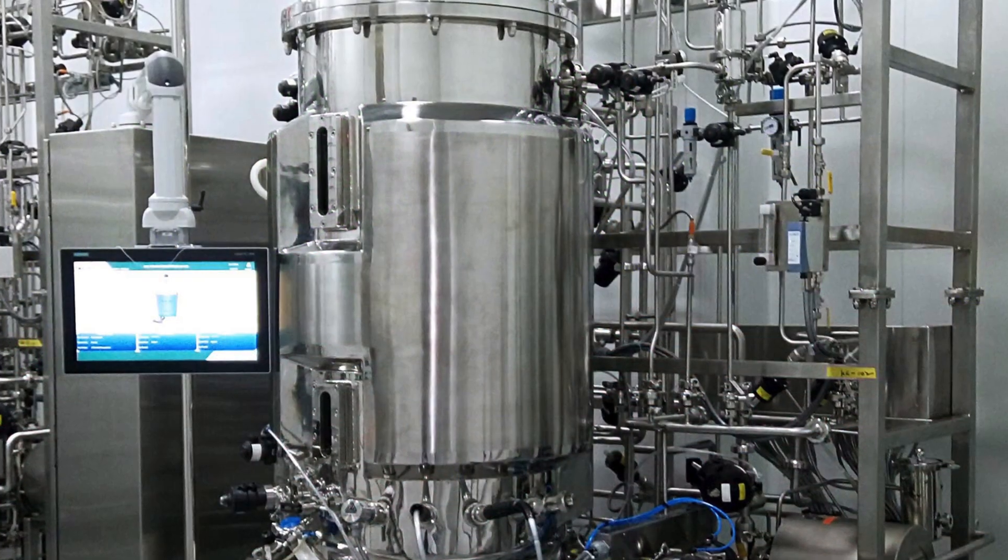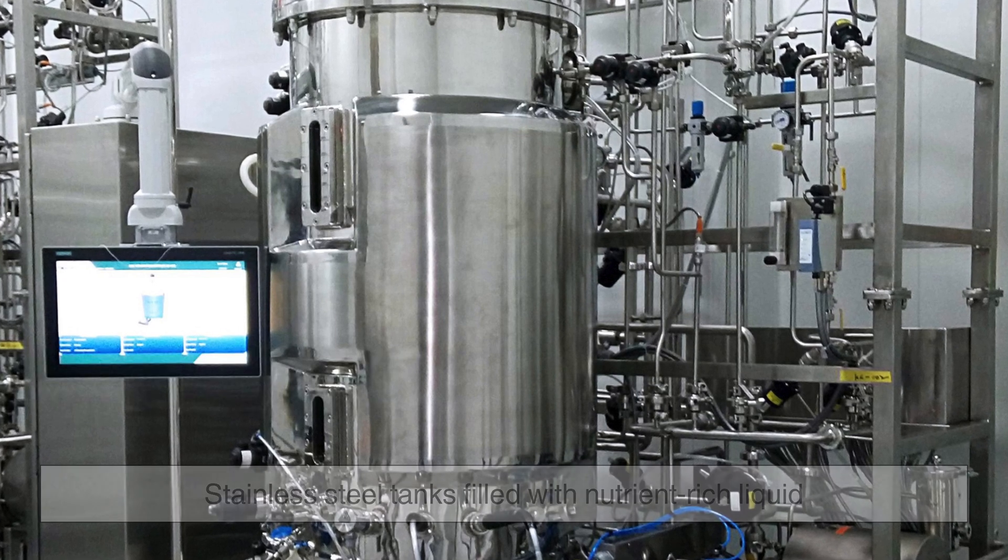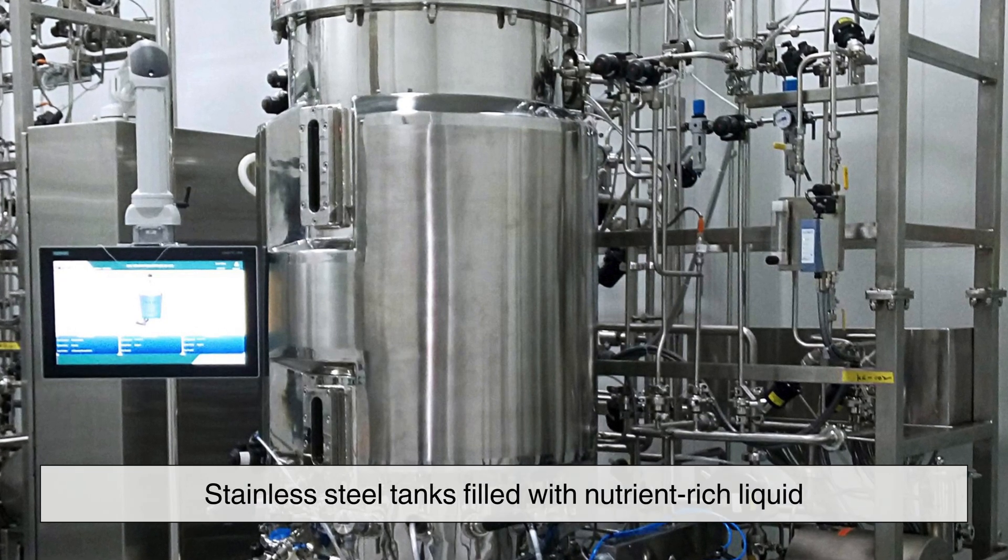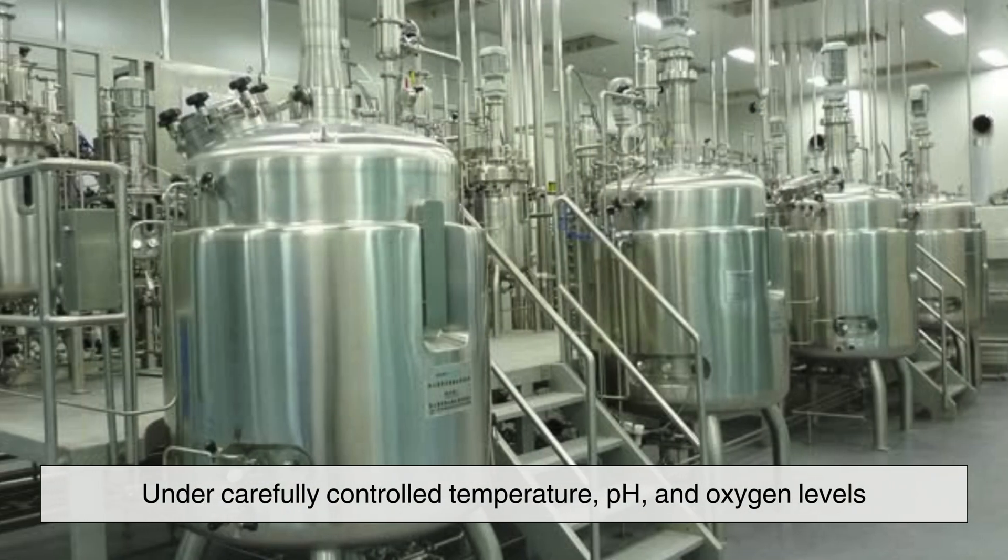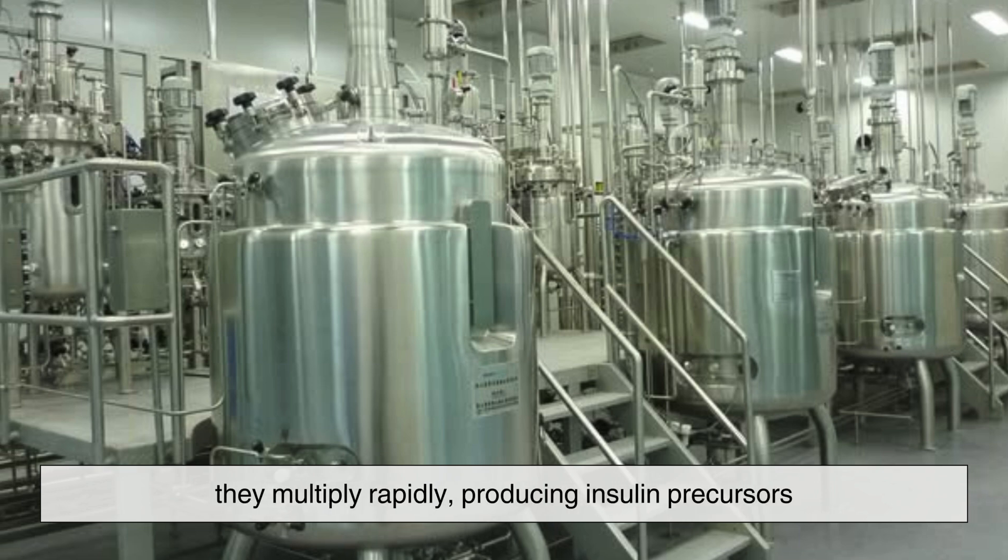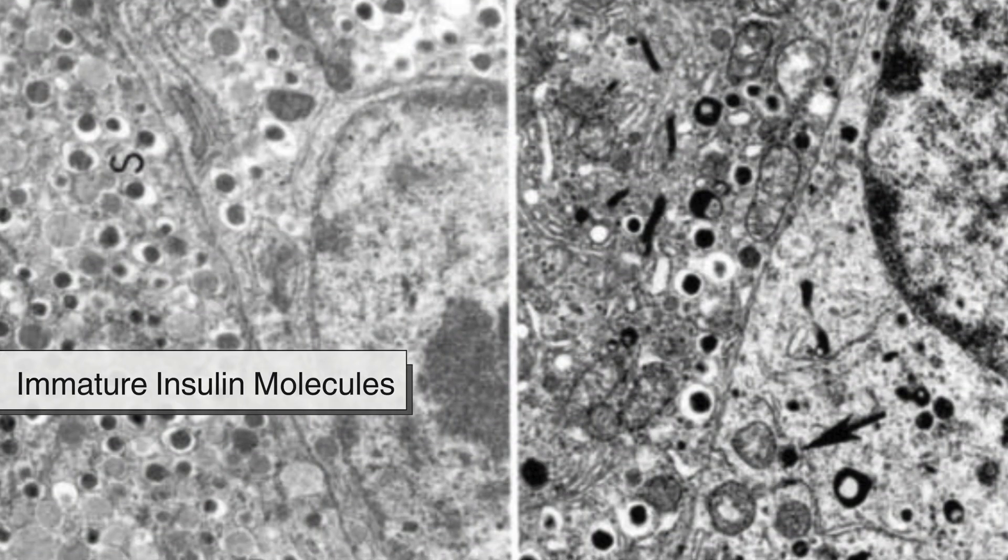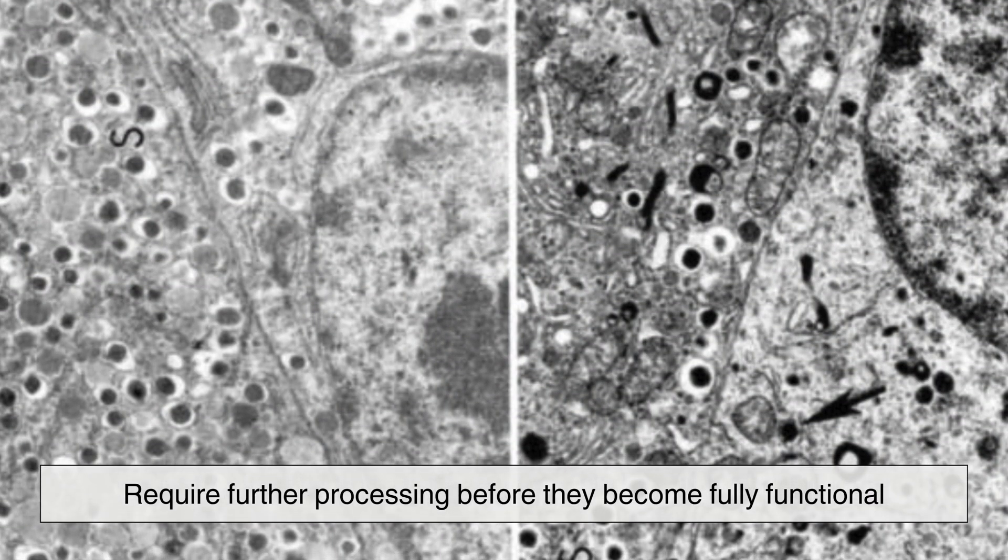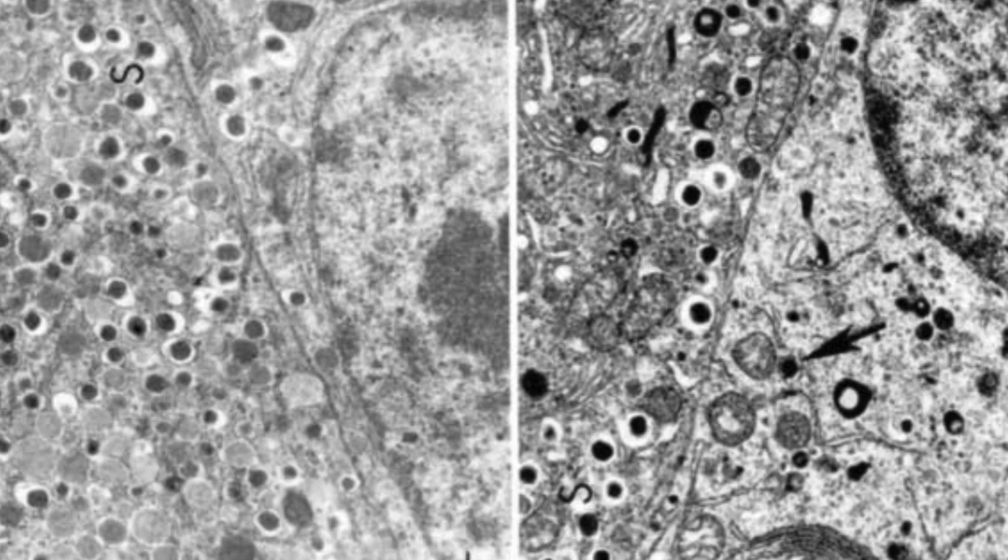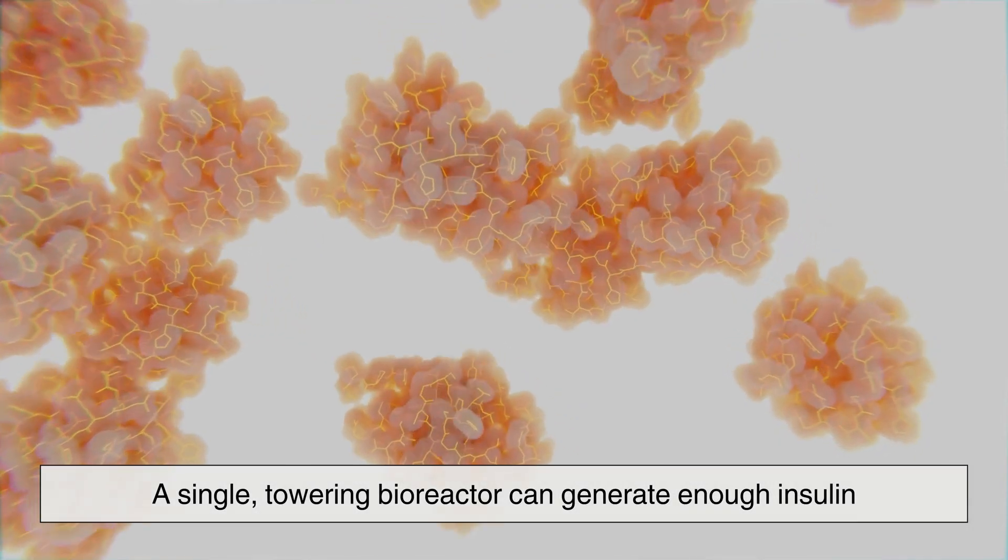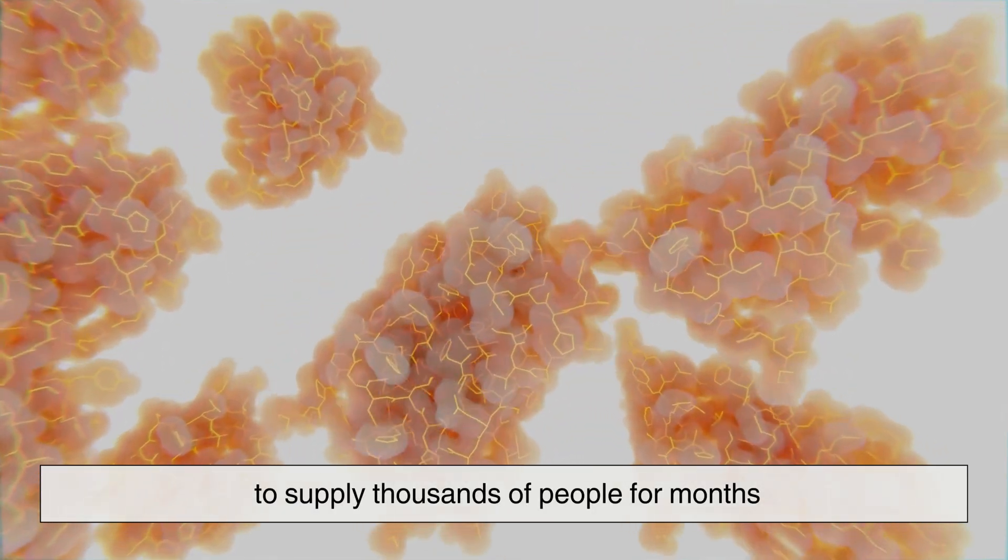Once genetically modified, the bacteria or yeast are placed in large bioreactors, stainless steel tanks filled with nutrient-rich liquid. Under carefully controlled temperature, pH, and oxygen levels, they multiply rapidly, producing insulin precursors. These immature insulin molecules require further processing before they become fully functional. The sheer scale of production is remarkable. A single towering bioreactor can generate enough insulin to supply thousands of people for months.